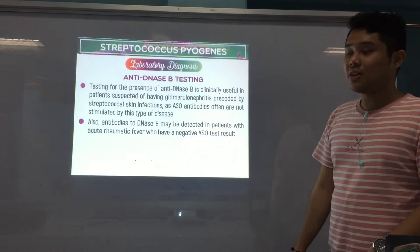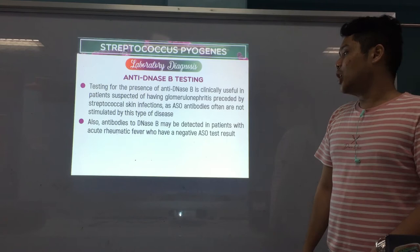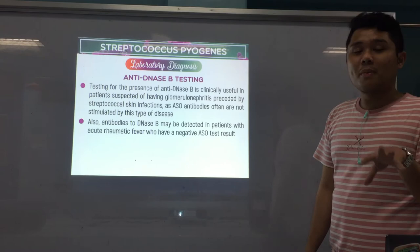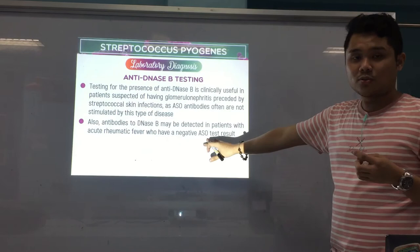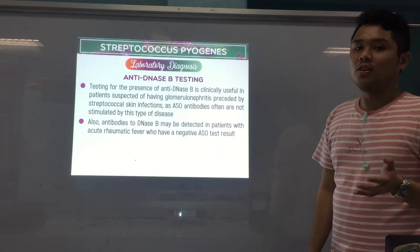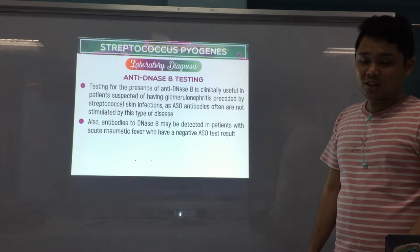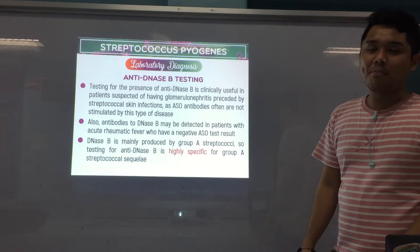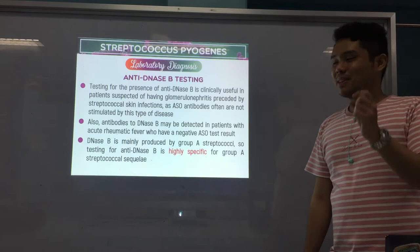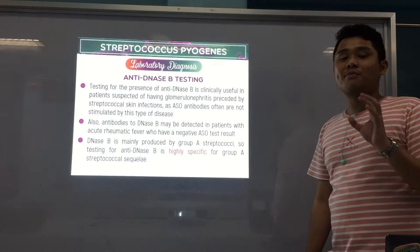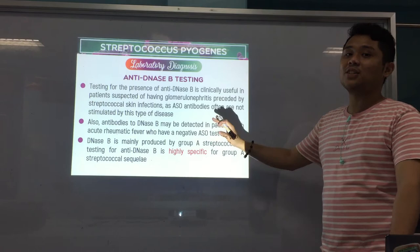ASO is usually for rheumatic fever or throat infections, but anti-DNase B is mostly for glomerulonephritis following skin infections. Also, antibodies to DNase B may be detected in patients with acute rheumatic fever who have a negative ASO test result. Furthermore, anti-DNase B testing is highly specific for group A streptococcal sequelae, because DNase B is mainly produced by group A strep.